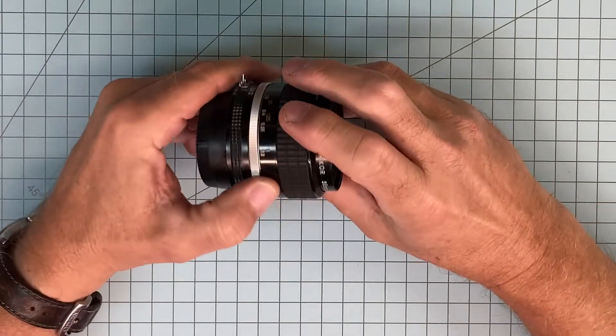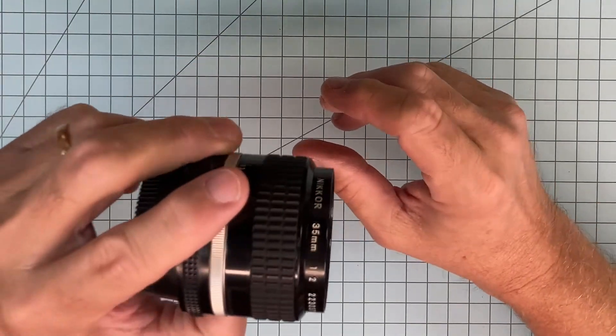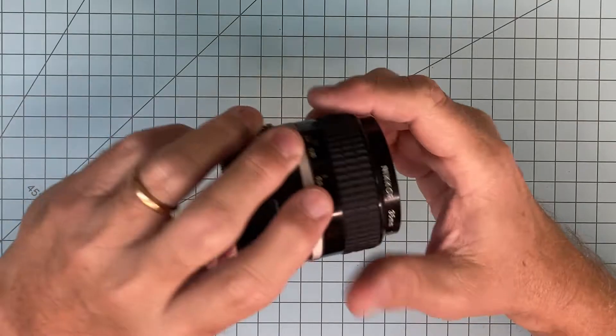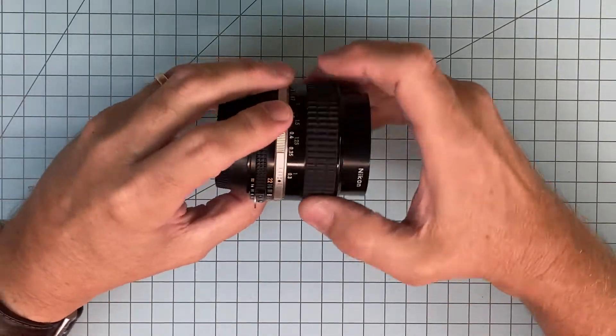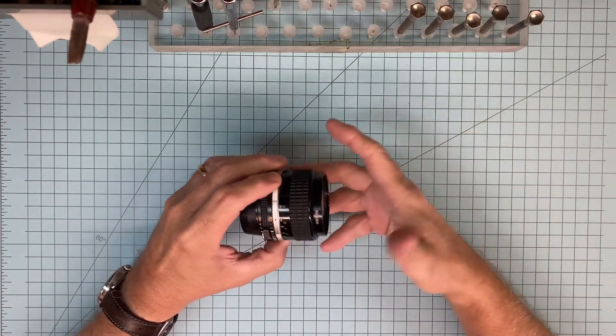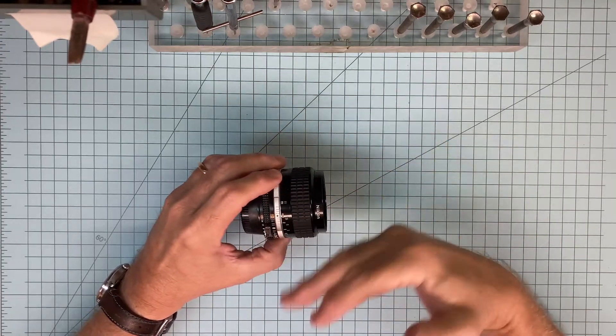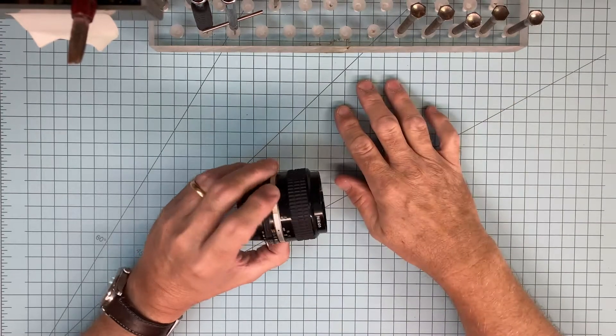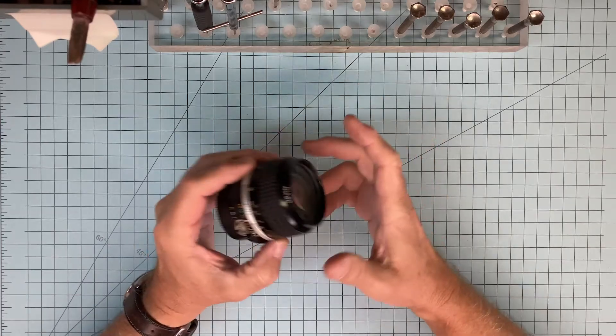What we have is this Nikon 35 millimeter f2, and it's got really dry lube. So we're going to completely take it apart and replace the lube with quality modern lube so this thing will run for another 25 years. Well, let's get started.